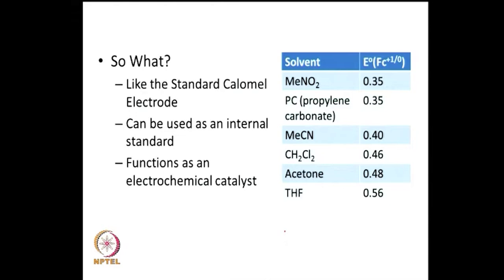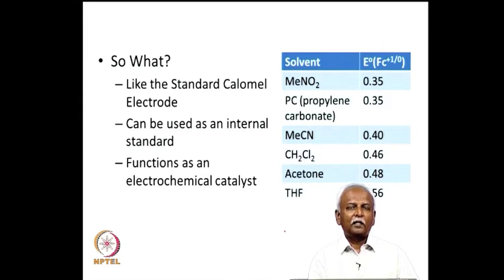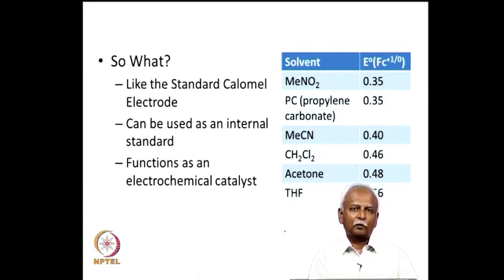In many instances, ferrocene can even be used as an internal standard. During the course of electrochemistry, one can add ferrocene into the solution and carry out the electrochemical experiment without ferrocene interfering with the processes going on. In other instances, ferrocene actually functions as an electrochemical catalyst — it permits the rapid transfer of an electron from the electrode to the species in solution. This kind of rapid electron transfer or catalysis of electron transfer is very important for electrochemical processes.